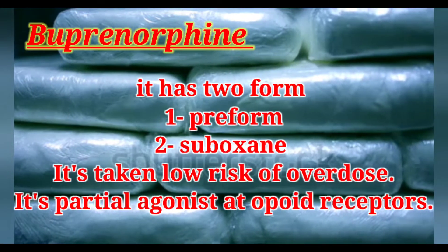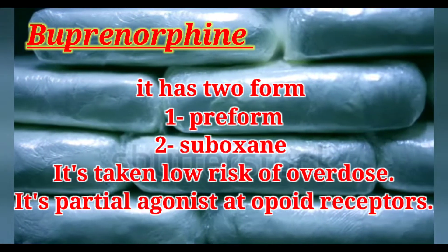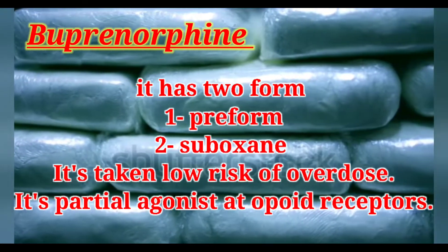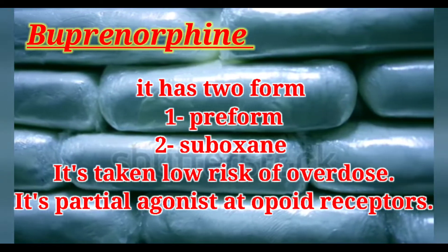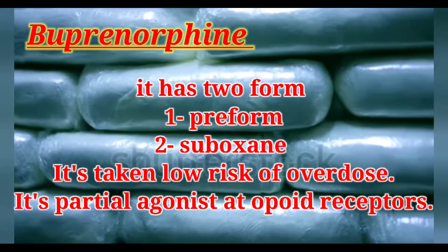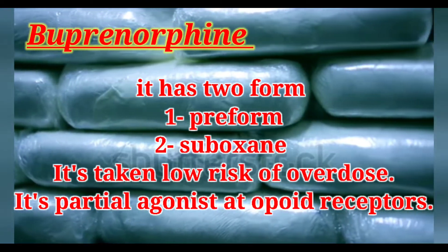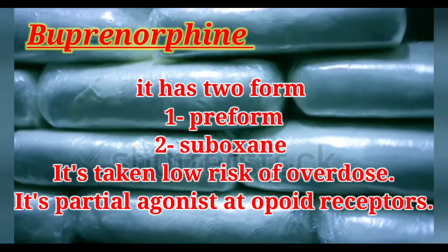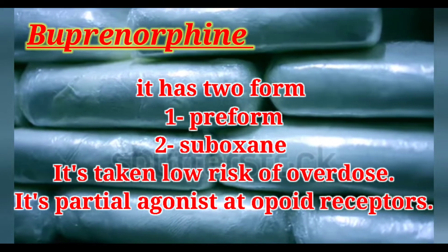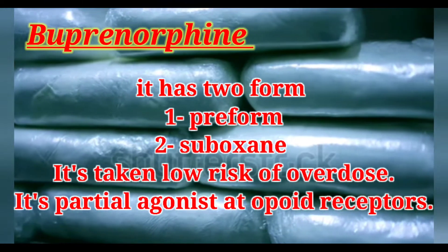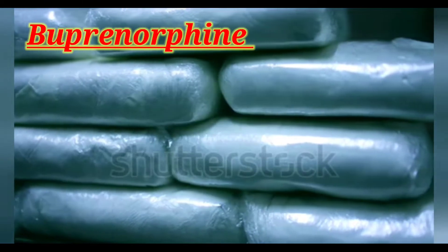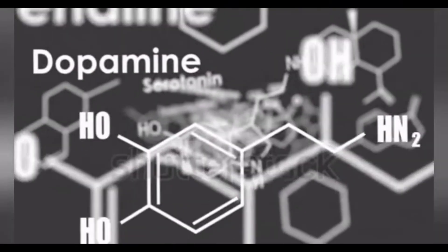The second medicine is buprenorphine, which comes in two forms: a pre-form and Suboxone. It has a low risk of overdose and is a partial agonist of the opioid receptor.